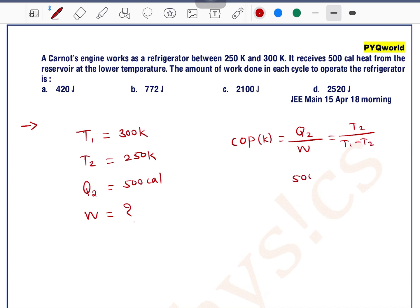We know the value of Q2 is 500, work we don't know, T2 is 250, T1 is 300 minus 250.